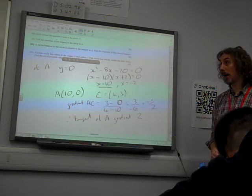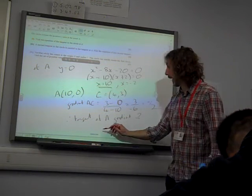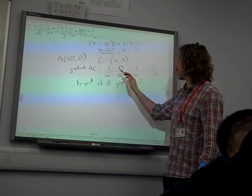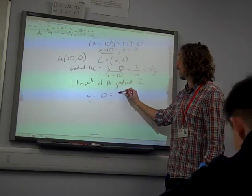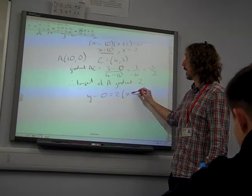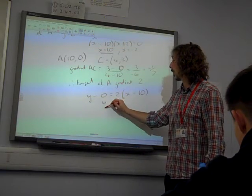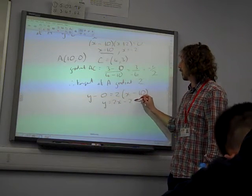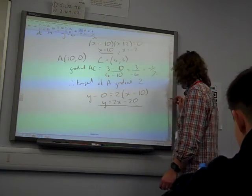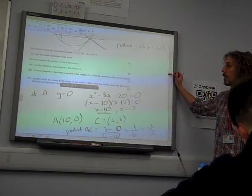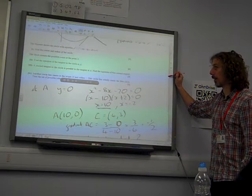So the line that I'm looking for, the tangent at A, goes through the point 10, 0 with gradient 2. y minus y1 is mx minus x1. y equals 2x minus 20. There is my tangent. For real. Six marks.